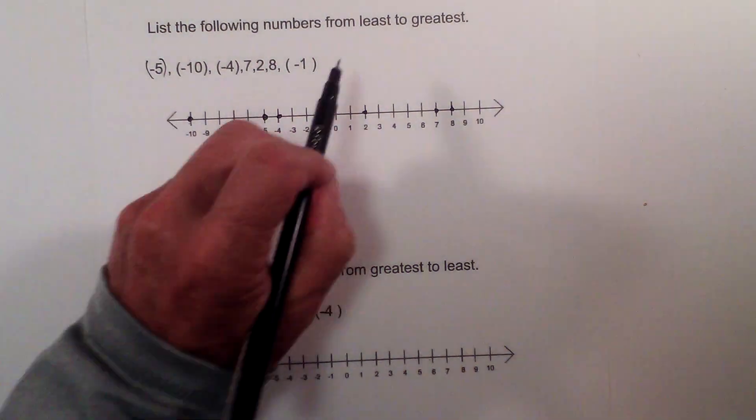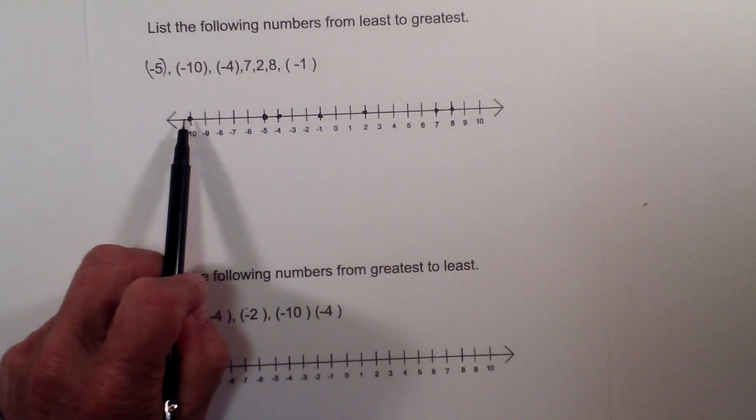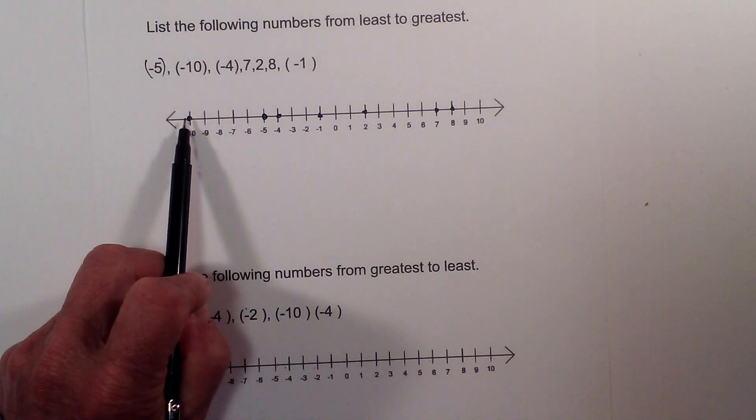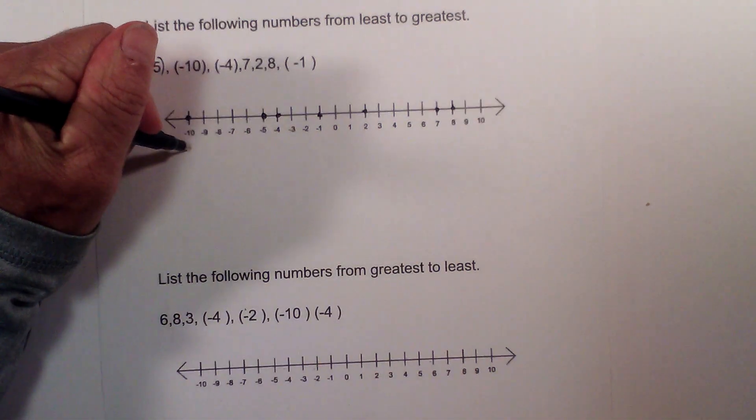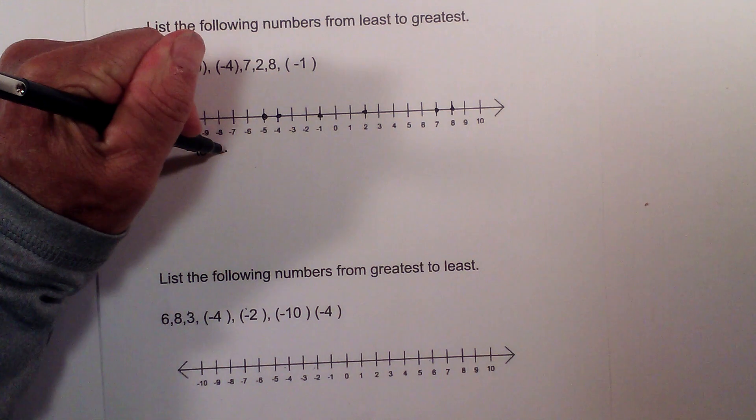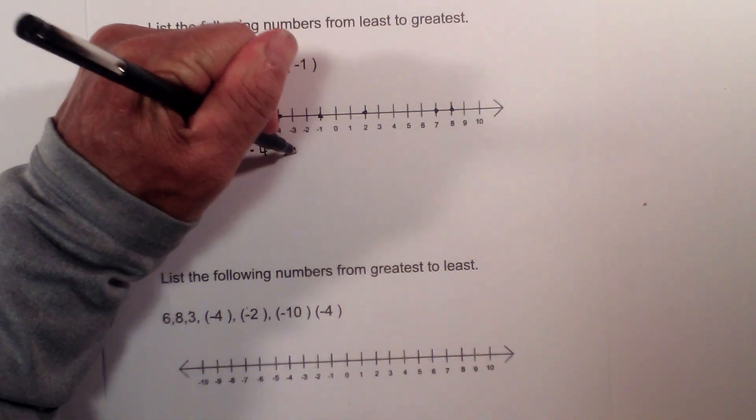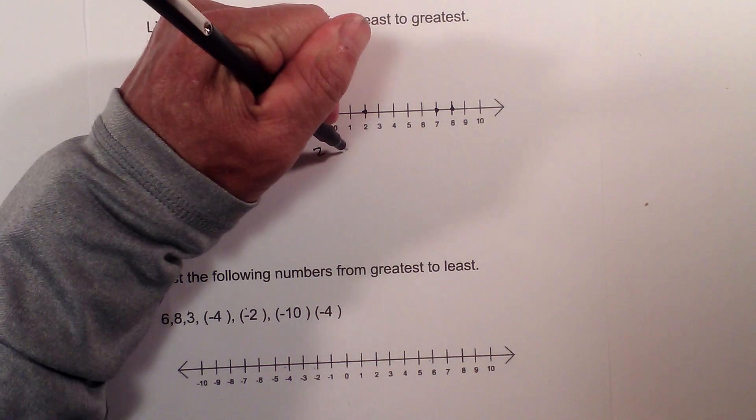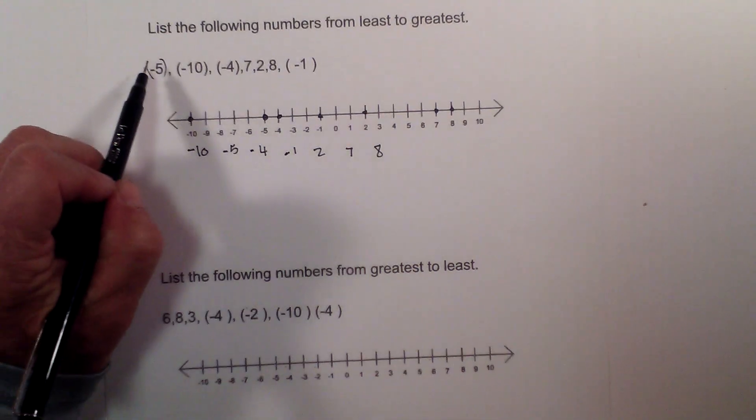So remember we are going from least to greatest. Least will be as far to the left and the greatest will be far to the right. So I can just list them. We have negative 10, negative 5, negative 4, negative 1, 2, 7, and 8.